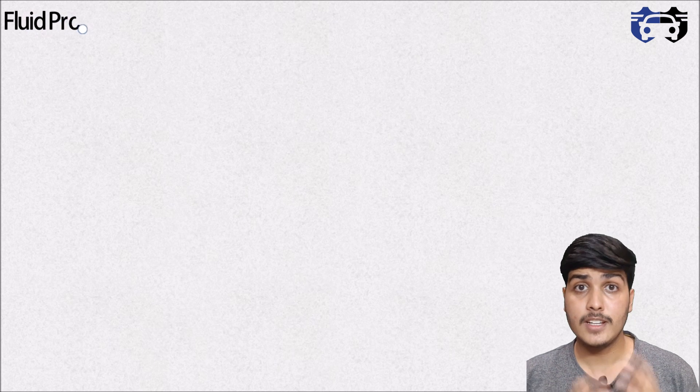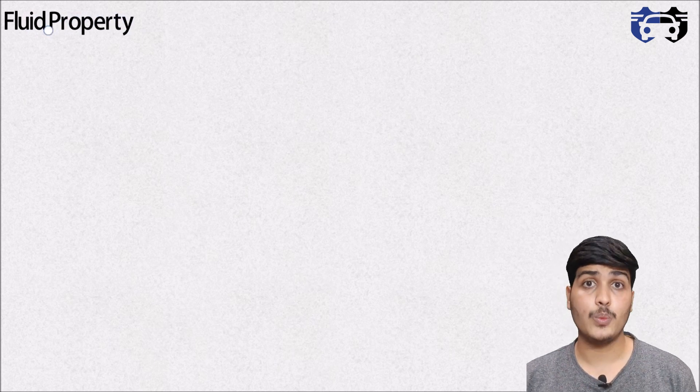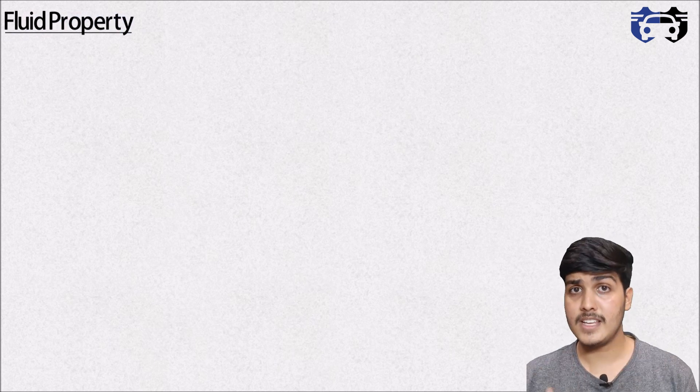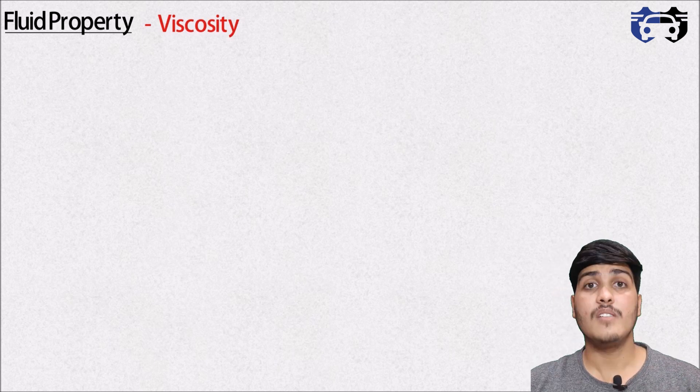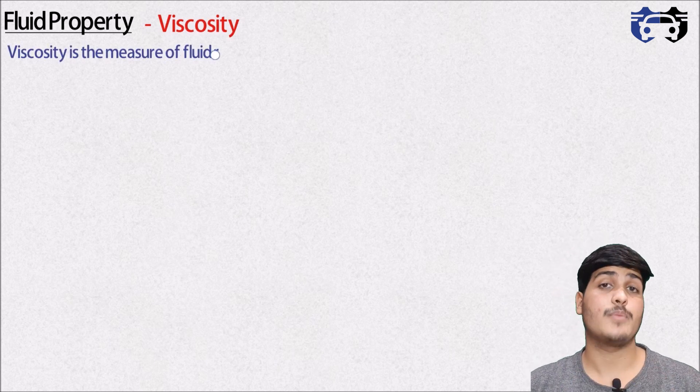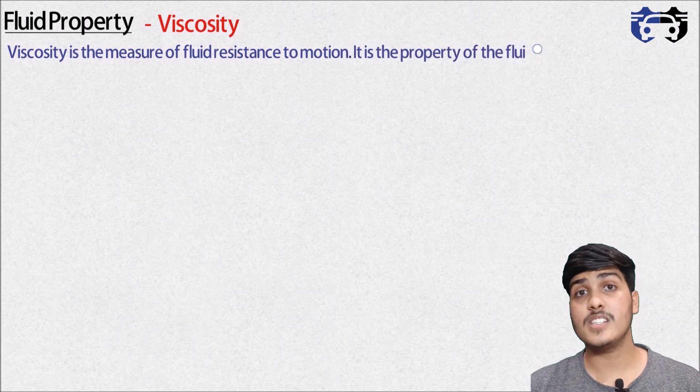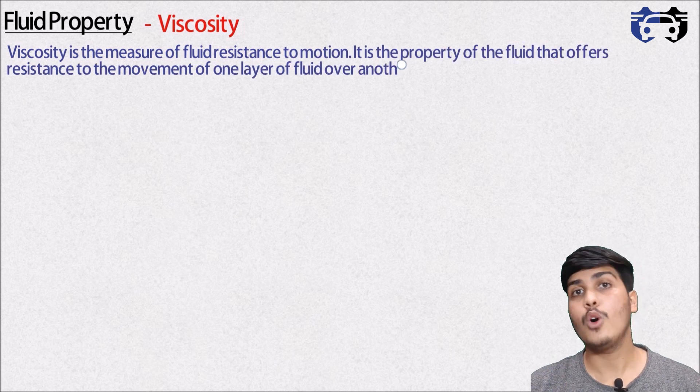Now let's understand the property of the fluid that affects the type of flow and due to which there is friction drag. Yes I am talking about viscosity. Viscosity is the measure of fluid resistance to motion. It is the property of fluid that offers the resistance between the movement of one layer of fluid over the other layer.